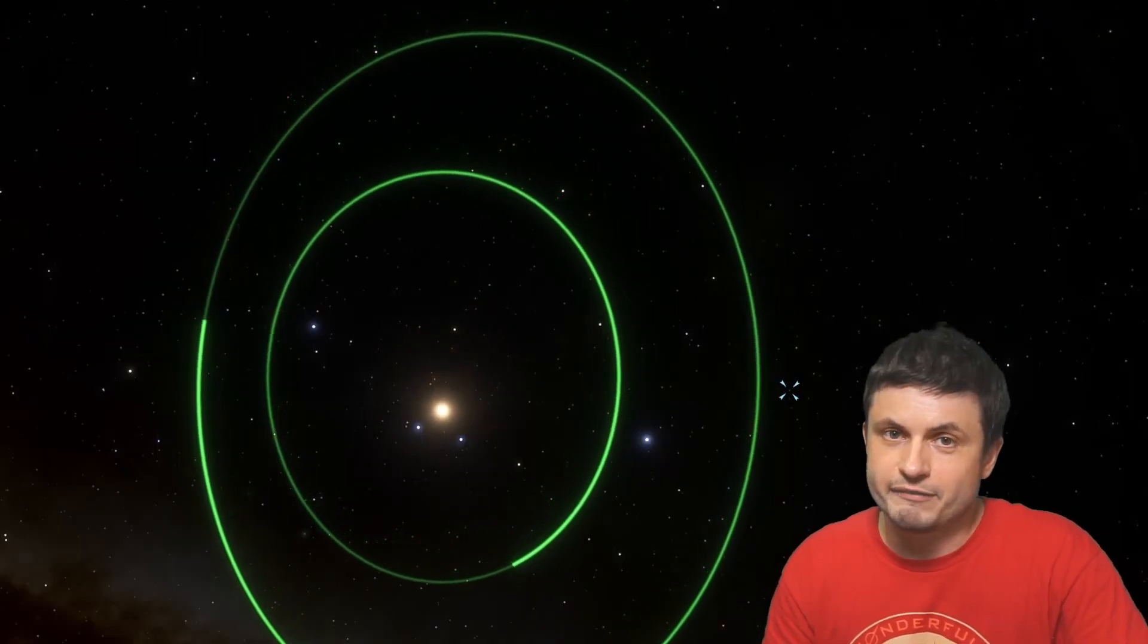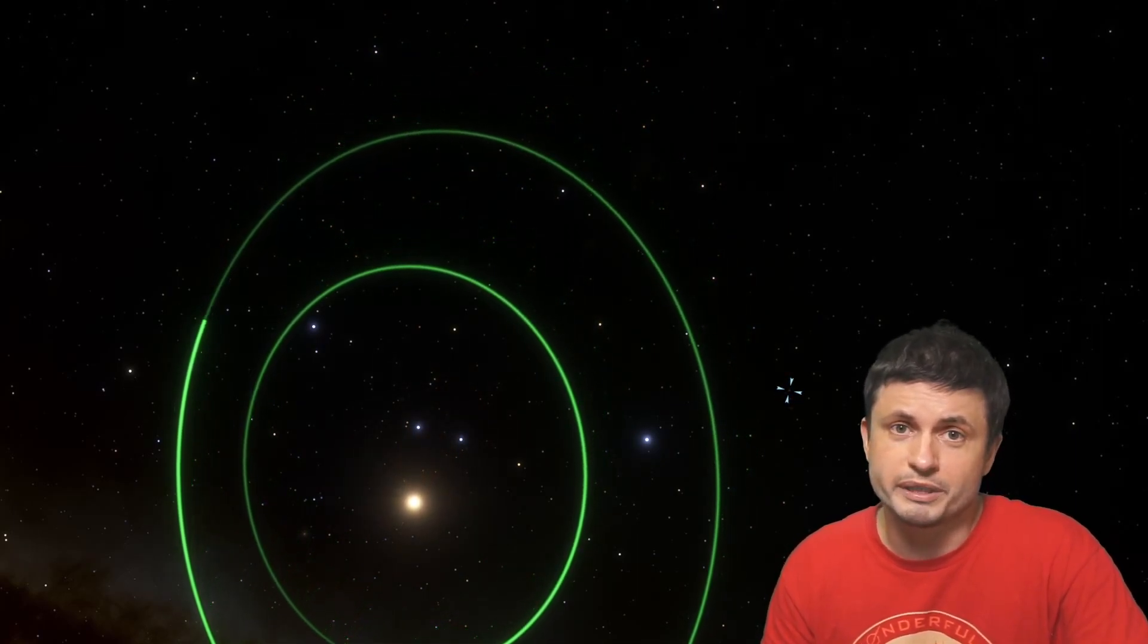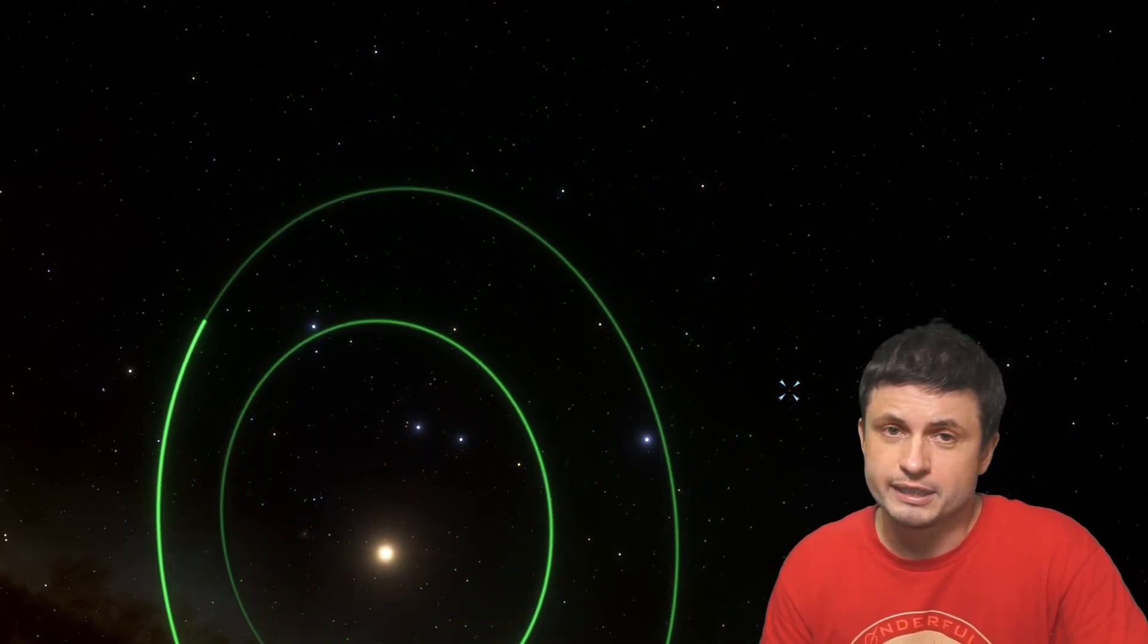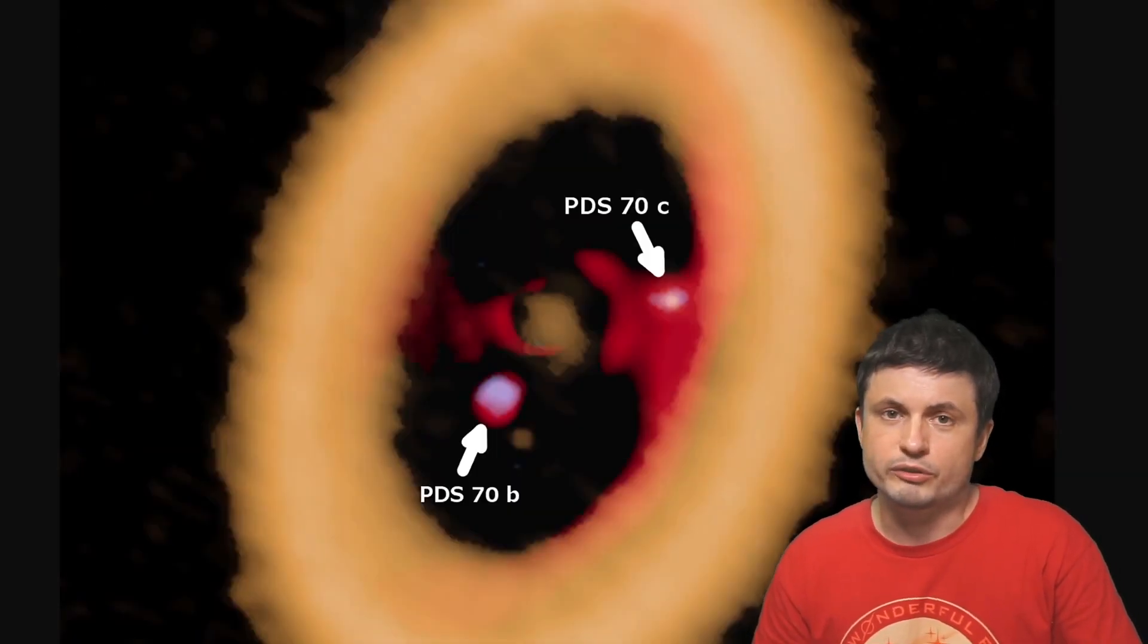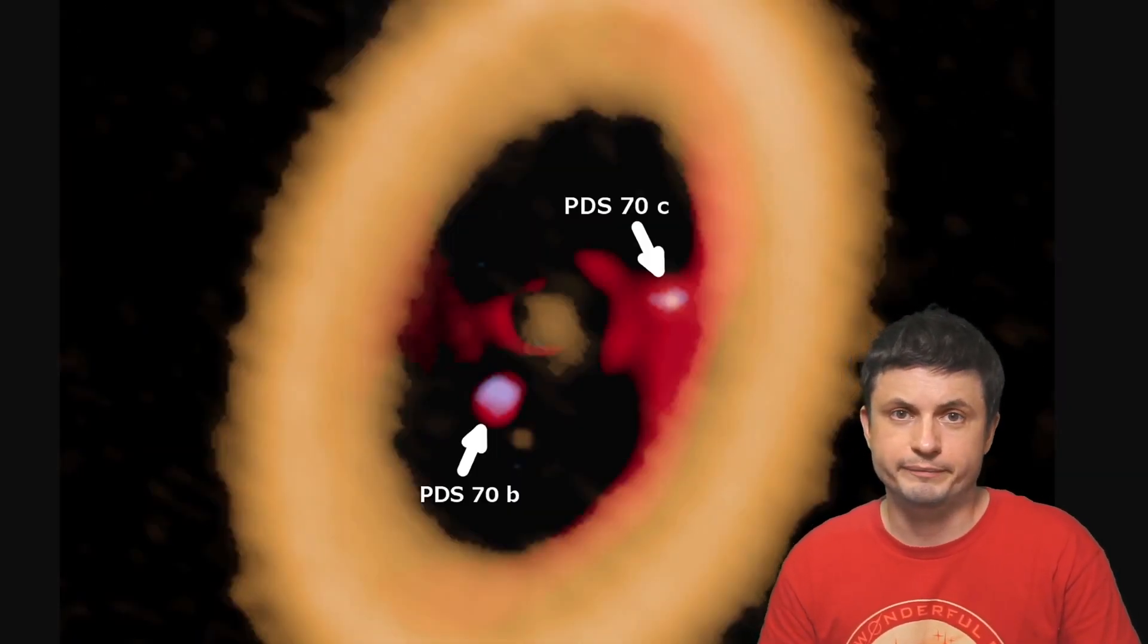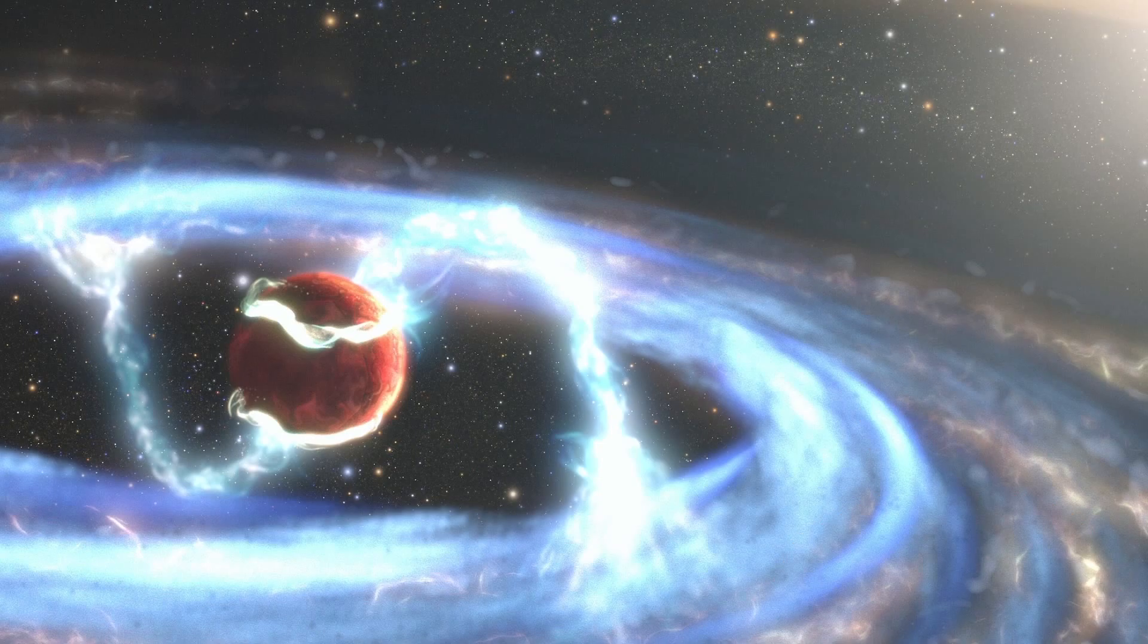Since PDS-70 system seems to have two objects reminiscent of Jupiter and Saturn, at least in terms of the mass difference, with one object being roughly four times more massive than the other, this system definitely represents an extremely important opportunity to understand how all this is formed and what happens in these baby star systems. For example, does the magnetic field truly play such an important role in creating both the planets and possibly even the moons around them?